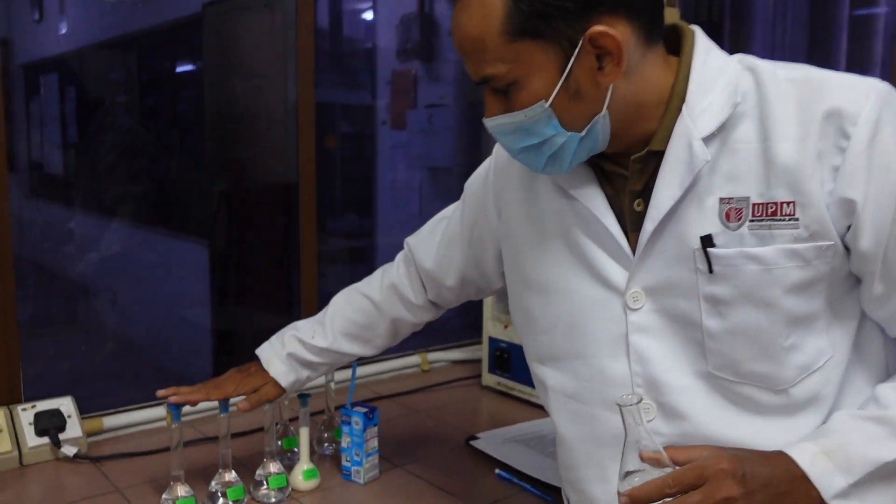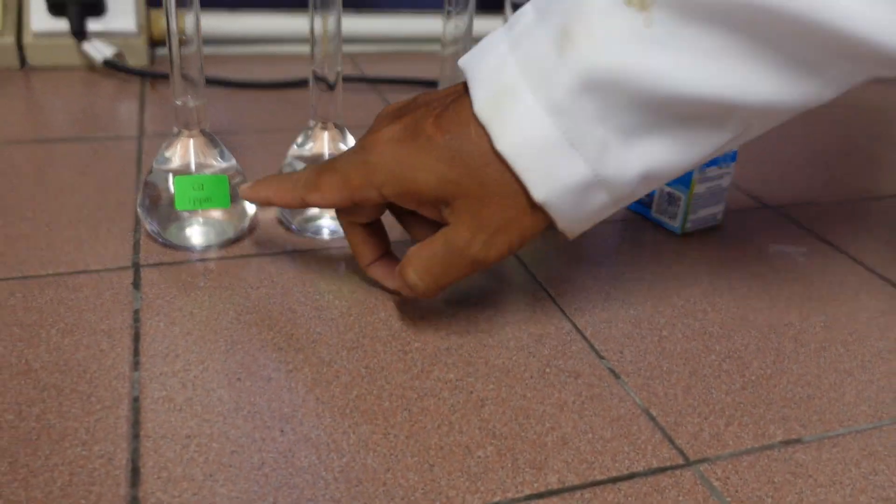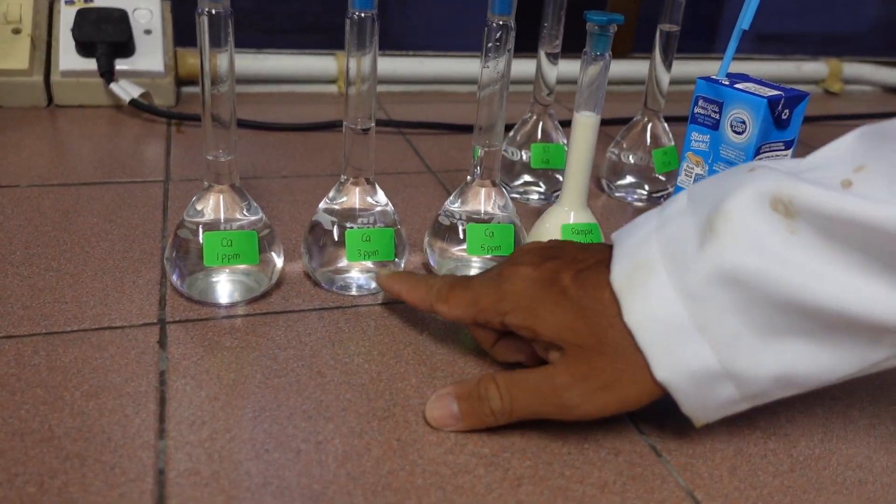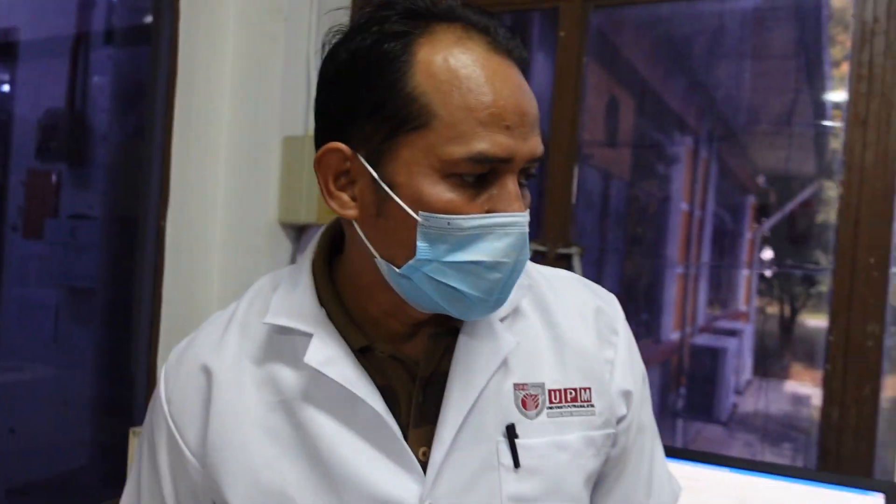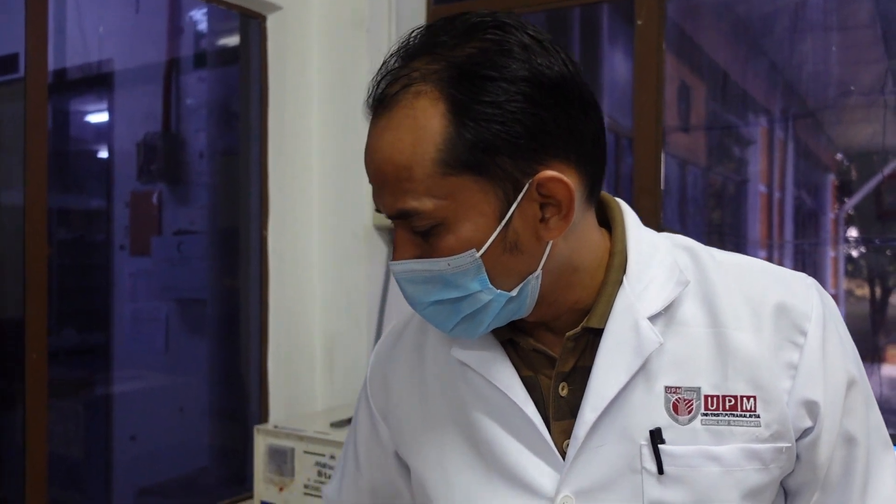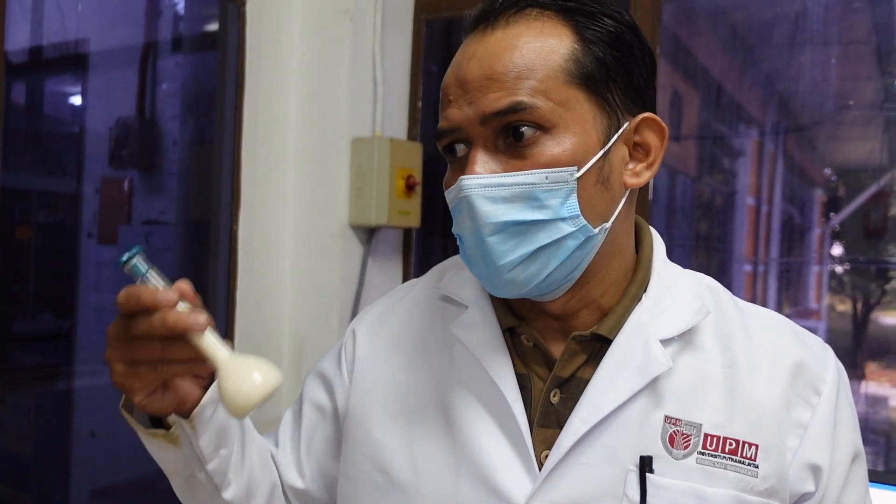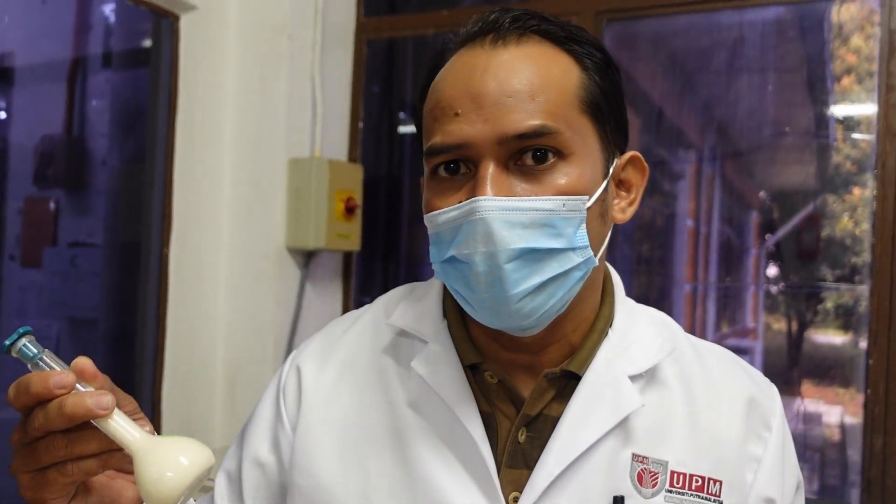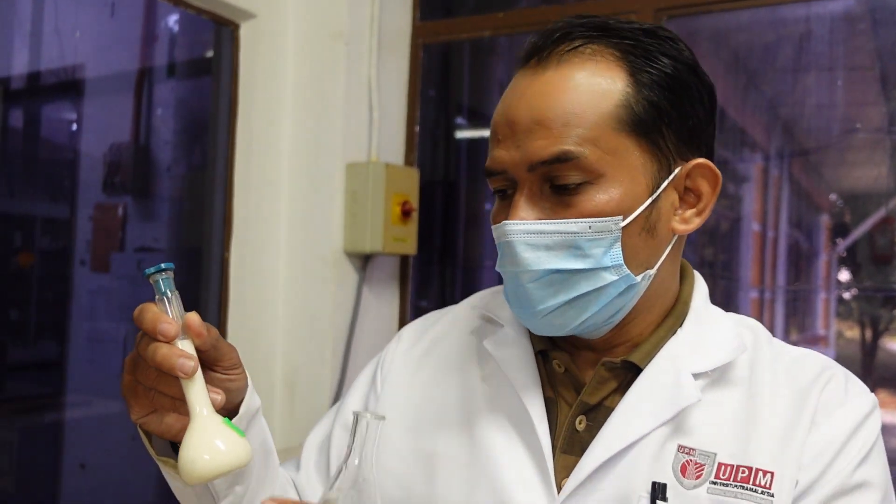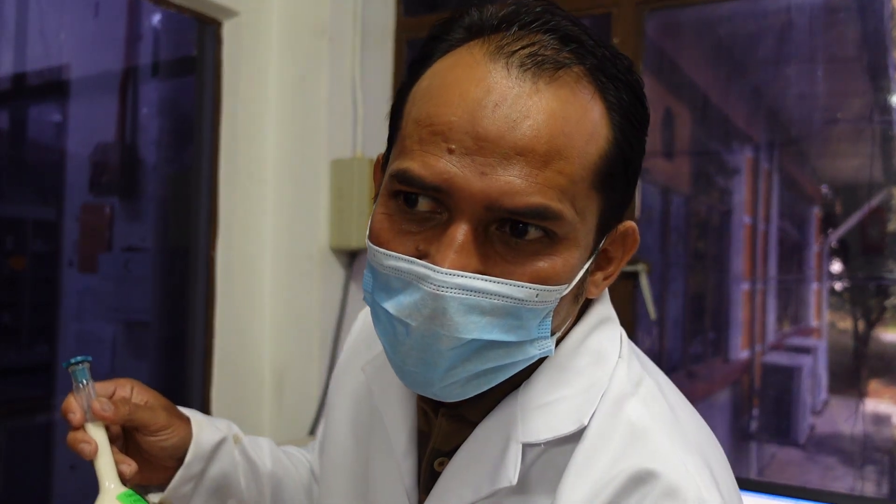Then you start with your standard. We already prepared three different concentration standards. You start with the lower concentration first: 1 ppm, then 3 ppm, 5 ppm. Once you're done with the standard, then you can run your sample. You can run as is or you have to dilute, depends on the standard. If the concentration is too high, exceeds the standard level, you have to dilute it. One beauty about AAS, it's pretty straightforward. You don't need to do extraction and those tedious preparation methods.